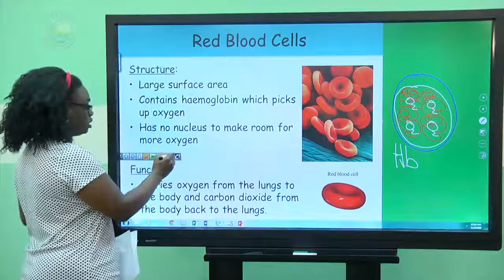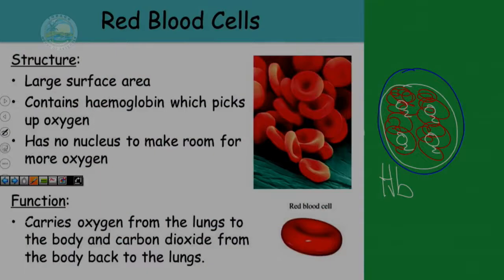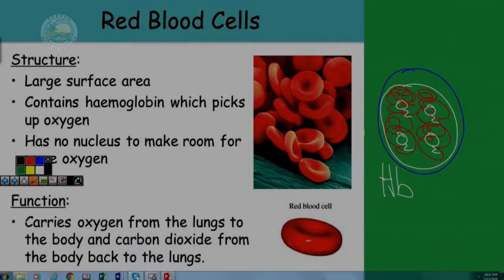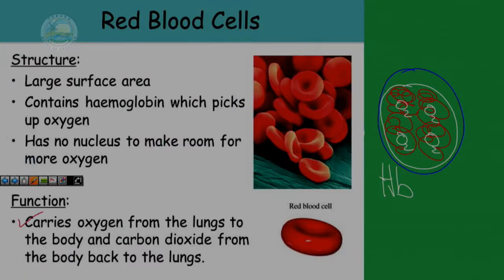The function of the red blood cells is to carry oxygen from the lungs to the body and carbon dioxide from the body to the lungs. So when it gives up its oxygen in the organ, it will take up carbon dioxide, go to the heart, vent to the lungs, exchange the carbon dioxide for oxygen, and then the cycle begins all over again.